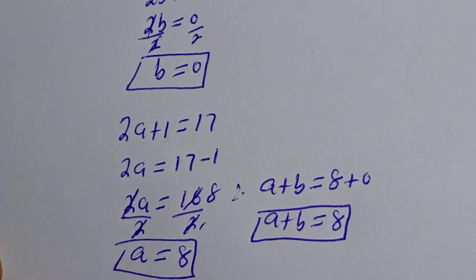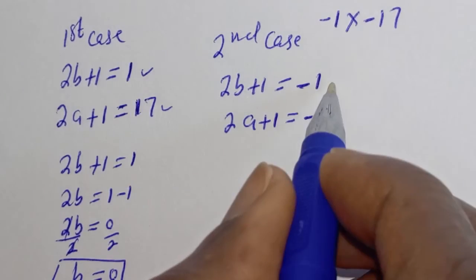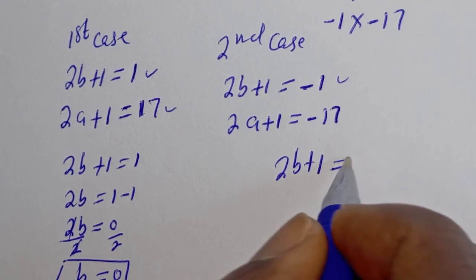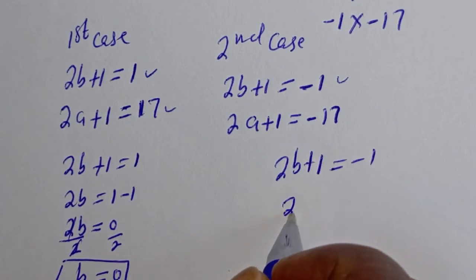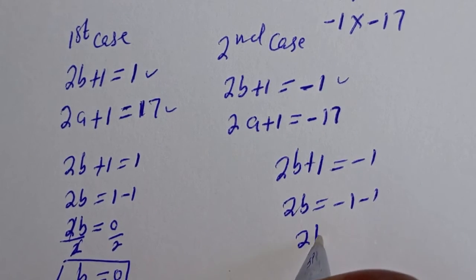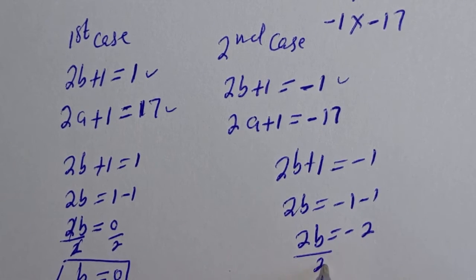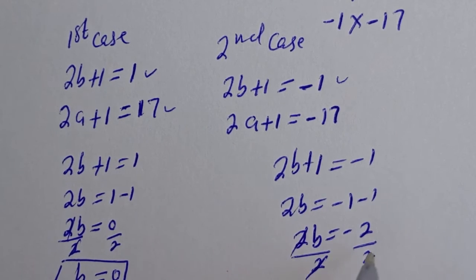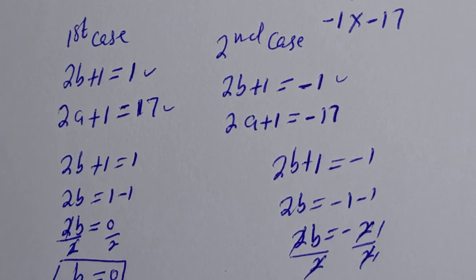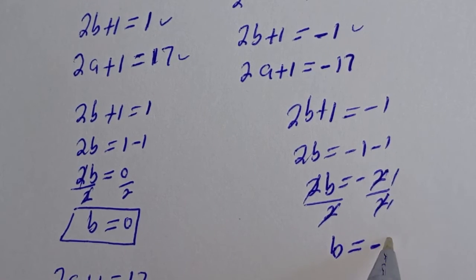Now let's consider the second case. From the second case, 2b plus 1 is equal to minus 1. Then 2b is equal to minus 1 minus 1, so 2b is equal to minus 2. Dividing by 2, b is equal to minus 1.